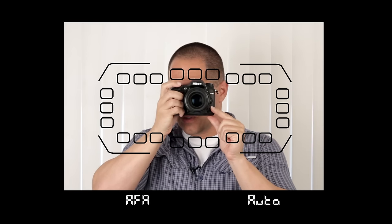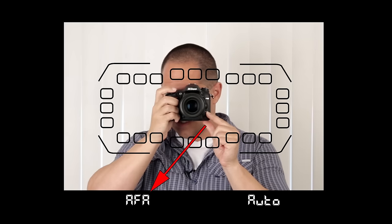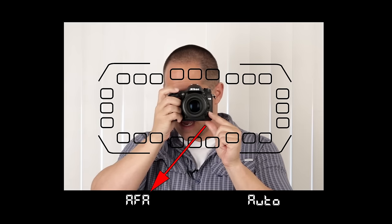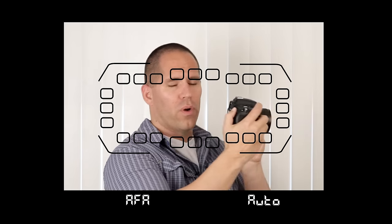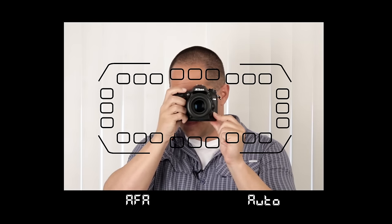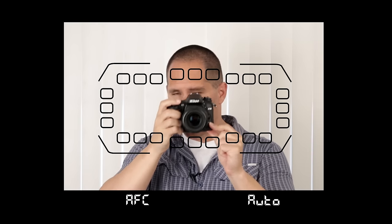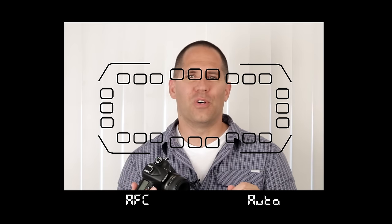Something you're going to notice immediately is that we have some letters on the bottom of our screen. On the far left, you should see something that says AFA or AFS. These are our focusing modes. When you hold this down and rotate your command dial or your thumb wheel, you're going to notice that these modes change. You should see AFA, AFS, AFC, and this is the best way to change your focusing modes.